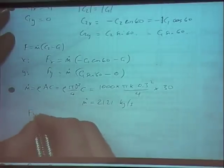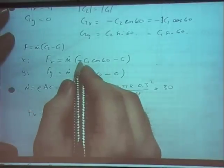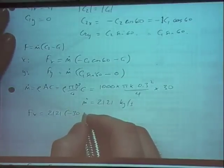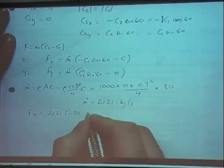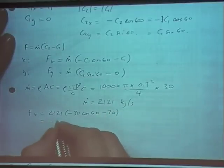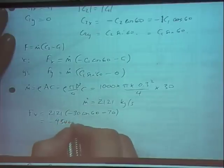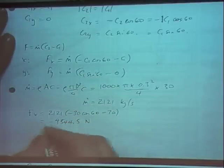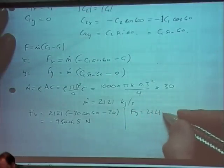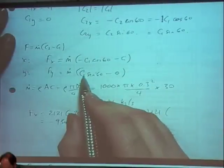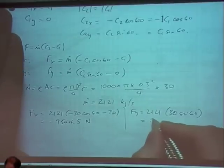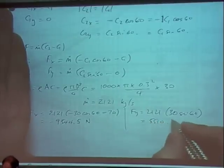So the force: 2121 kilograms per second times by, here we've got minus 30 cos of 60 minus 30. So that's going to come out to be minus 9544.5 newtons. Fy, it's the same equation, so 2121 times by c1 sine of 60, so that's 30 sine of 60, and that comes out to be 5510.5 newtons.